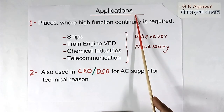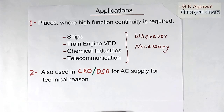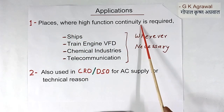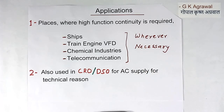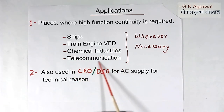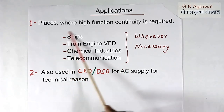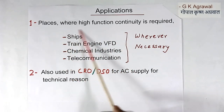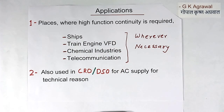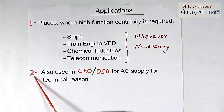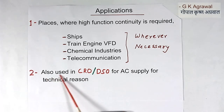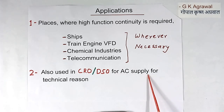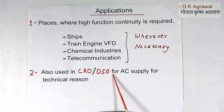Now for applications: the insulated neutral system is used where high functional continuity is required for the equipment — like ships, train engine VFDs, chemical industries, and telecommunications. In all these cases, we don't need the insulated system everywhere, only wherever necessary. It is also used for AC supply to CROs and DSOs. I have made a separate video for that — you can watch it.